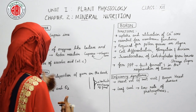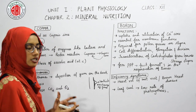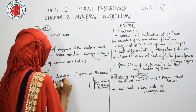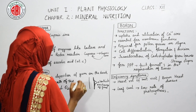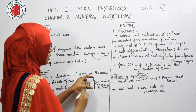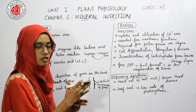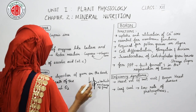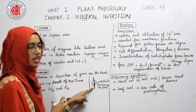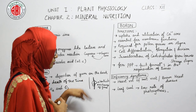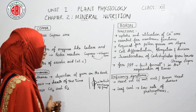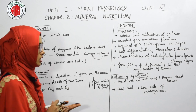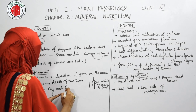Due to the deposition of gum, cellular respiration cannot take place, resulting in necrosis — the death of tissues. When gum is deposited on the lenticels, gaseous exchange stops, causing tissue death, and we observe a decrease in carbon dioxide and oxygen within the plant body.